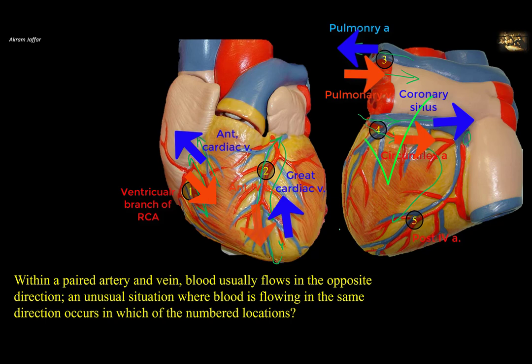Location 5 shows the posterior interventricular artery, accompanied by the middle cardiac vein. The middle cardiac vein carries blood up to the coronary sinus. At location 5, the venous blood and arterial blood pass in opposite directions.